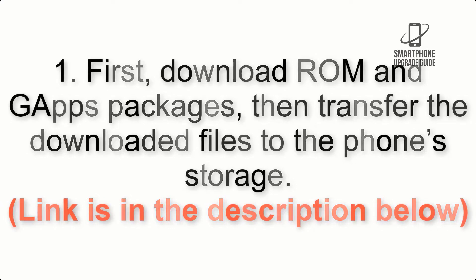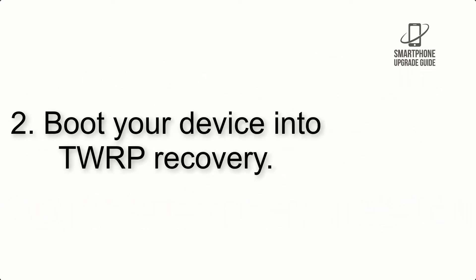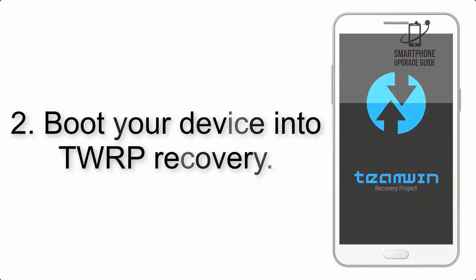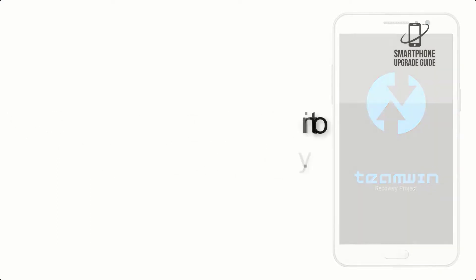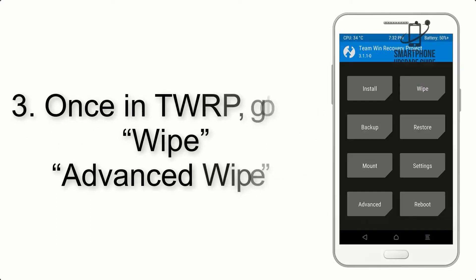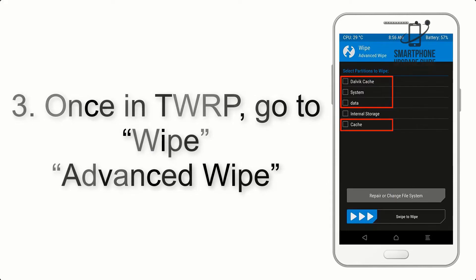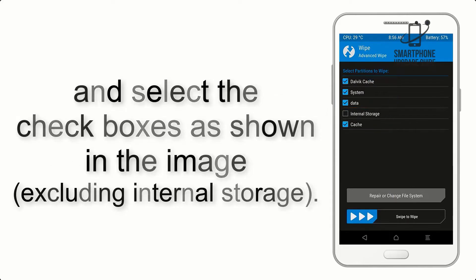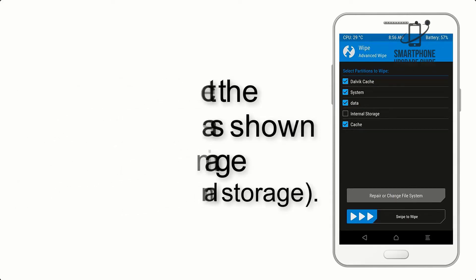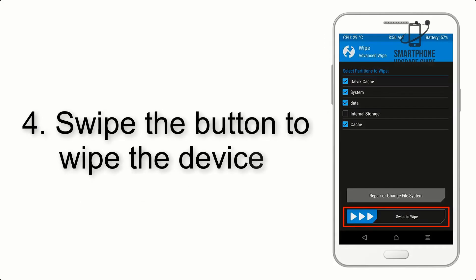The link is in the description below. Step 2: boot your device into TWRP recovery. Once in TWRP, click on Advanced Wipe and select the checkboxes as shown in the image, excluding internal storage.